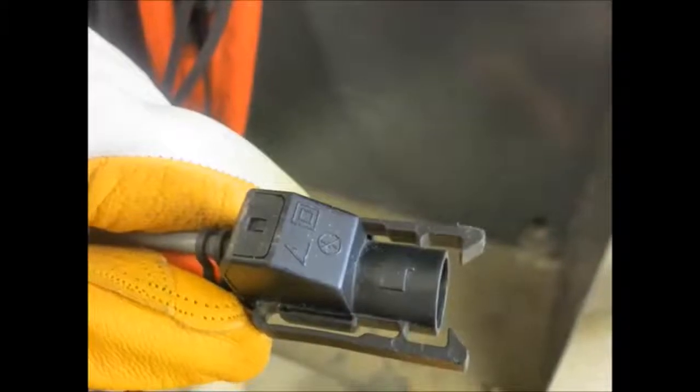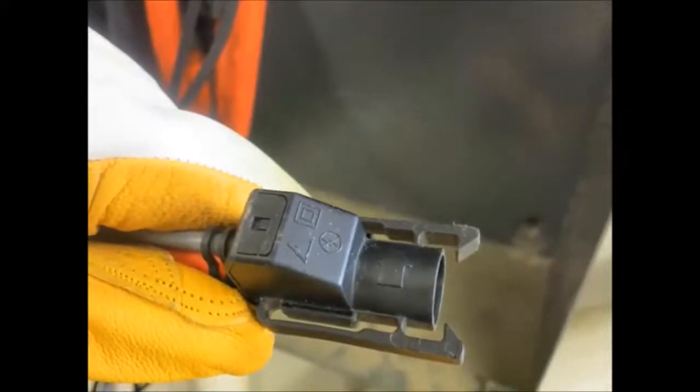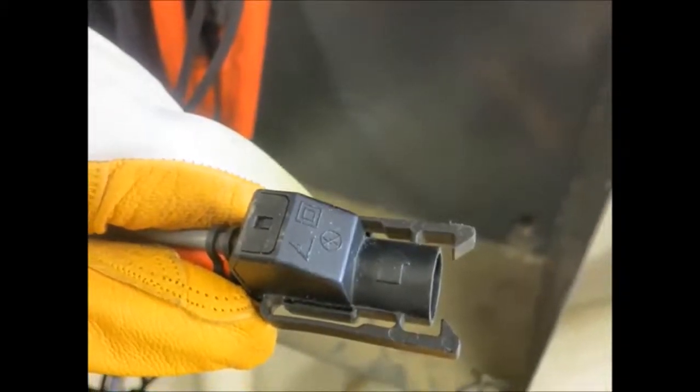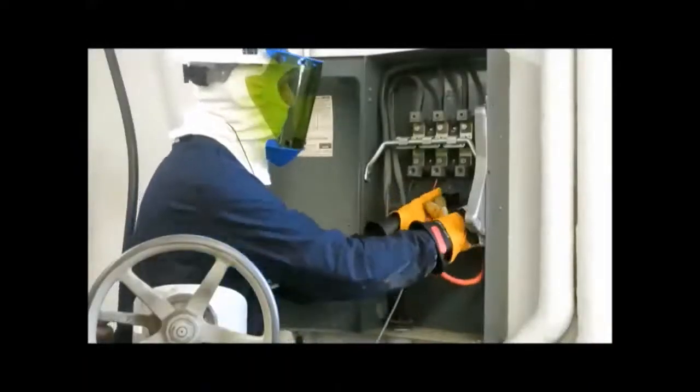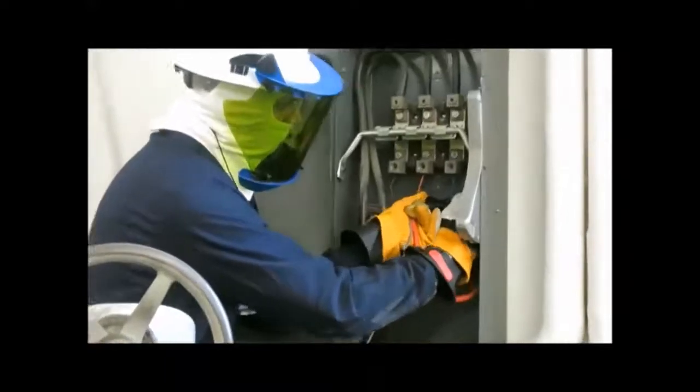First, ensure that the arrows on the current sensor transducers are all pointed in the direction of the current flow. Place one transducer on each leg of the three phases. The neutral current transducer should be placed around a ground wire.